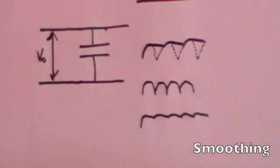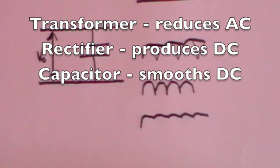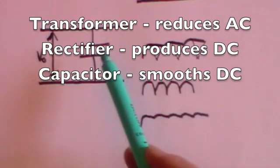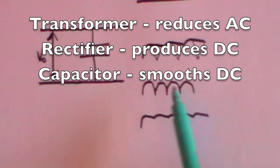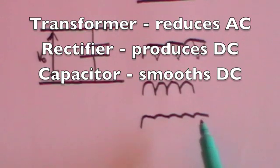To summarise: we take a transformer which reduces the wall socket's 230 volts to maybe 12 volts AC. We put it through a rectifier made of four diodes, which takes the 12 volts AC and produces a variable voltage that no longer goes negative. Finally, we use a capacitor to smooth out those variations and produce a near-enough direct current — certainly one that our computers will put up with.